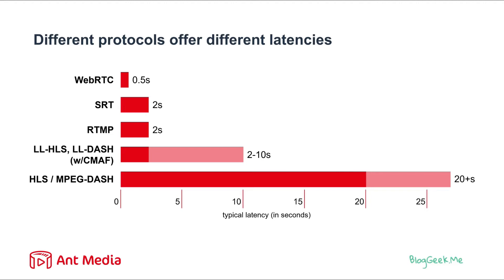WebRTC is capable of doing that because it sacrifices some of the capabilities of the other protocols, like the ability to retransmit data. If data gets lost along the way because of network congestion or issues, the other protocols can retransmit it — something that WebRTC cannot do. Because if you need to retransmit, it means that you lose time, it means that you lose latency.